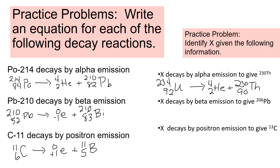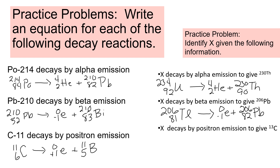Another example: unknown X decays by beta — 0 -1 electron — to give Pb-206. Pb is element 82. To find the parent: 82 minus 1 is 81 for the bottom number, and 206 plus 0 stays 206 for the top. Element 81 is thallium, Tl — not to be confused with Ti.